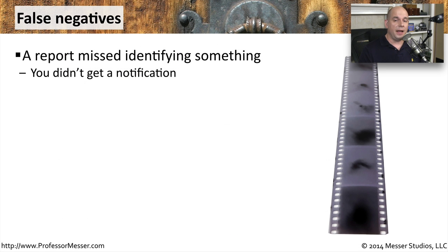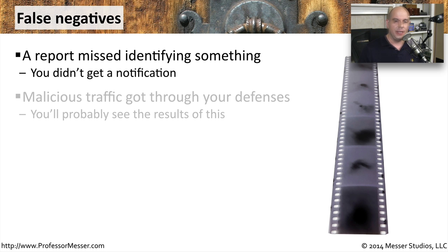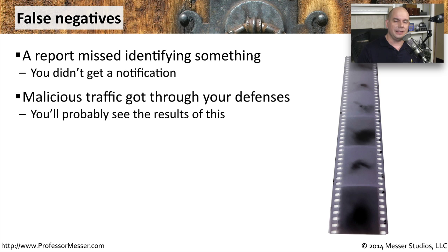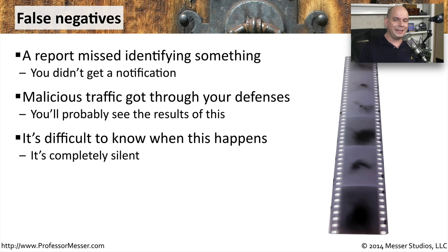The opposite of a false positive is a false negative. That means that you did not receive any alerts — no bells went off, there were no sirens — but something bad actually did get through your security systems. This got right through your defenses, and it's difficult to go back and determine if there was a false negative, because there's no way to rewind and know exactly where this might have come into your network. This is completely silent, so if you had to reconstruct how a piece of malware got into your environment, it becomes a lot more difficult.